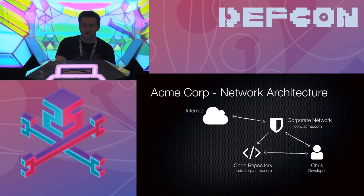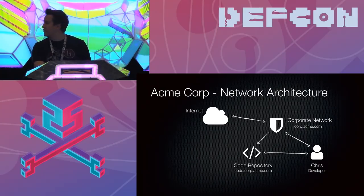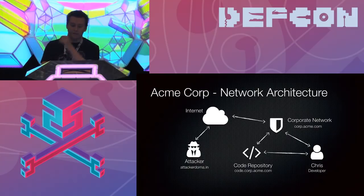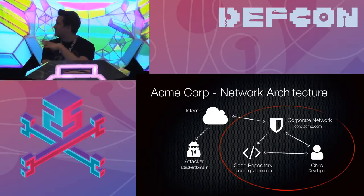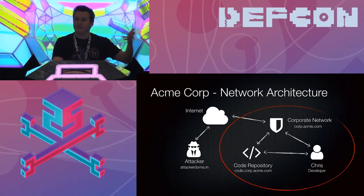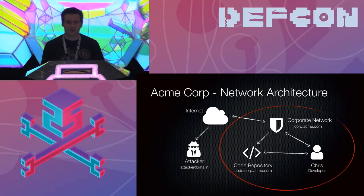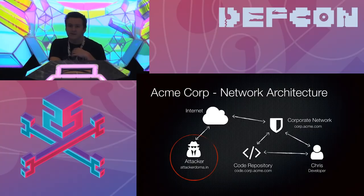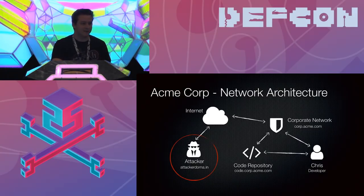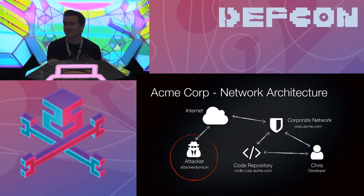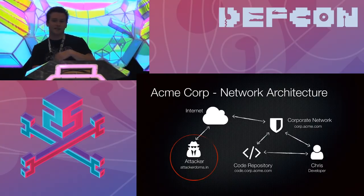Our developer Chris needs to get to the internet so he can look at cat pictures at work, so we're going to connect the corp network to the actual internet. We need our bad actor in this scenario, so we're going to add our attacker who owns attacker domain. We're going to refer to the entire right side as the intranet — the internal network of this fictional company. We're going to assume our attacker has insider knowledge of this network layout — whether your network engineer decided to post the entire topology on his resume or a disgruntled employee took some internal docs, I'll leave that up to your imagination.